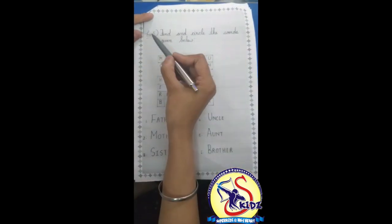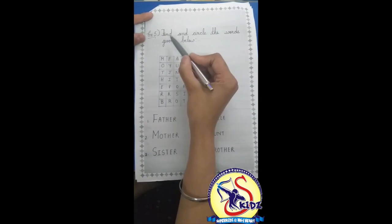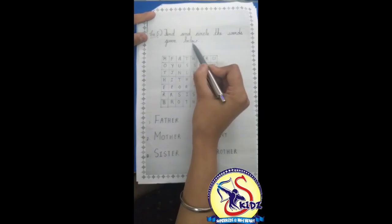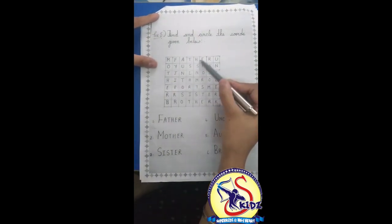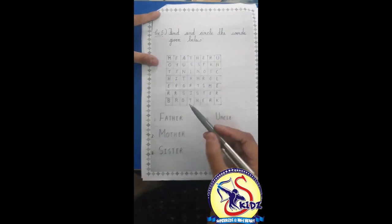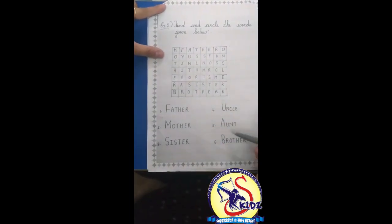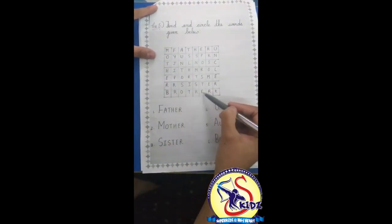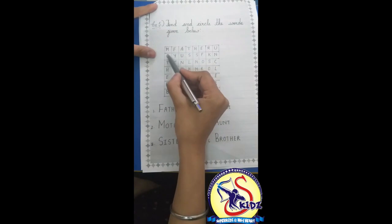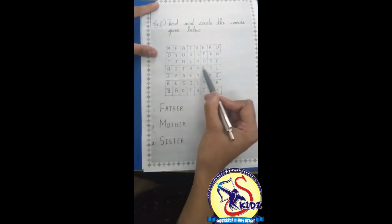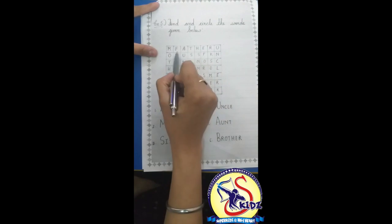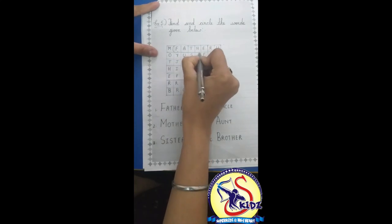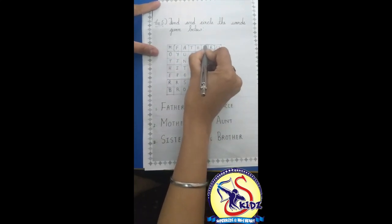Now kids, come to the last exercise, exercise 5. The exercise is: find and circle the words given below. You can see there are different alphabets and you have to find the words. Our first word is father. We find F-A-T-H-E-R in the grid. We will make a big circle and keep the word father inside it.